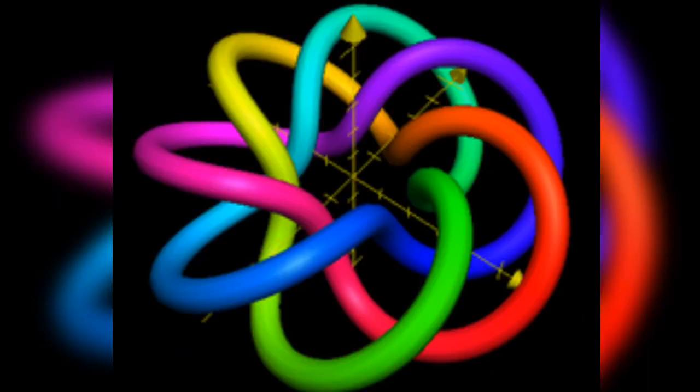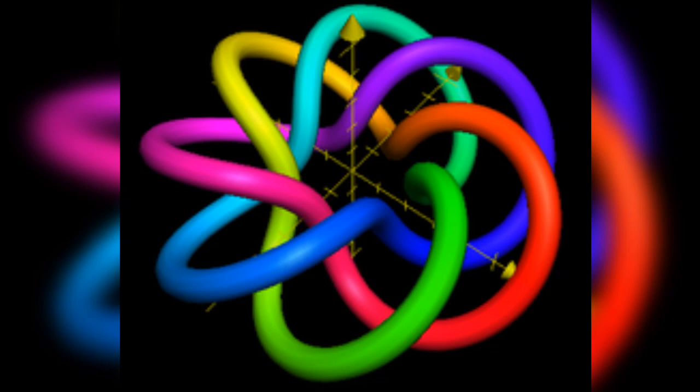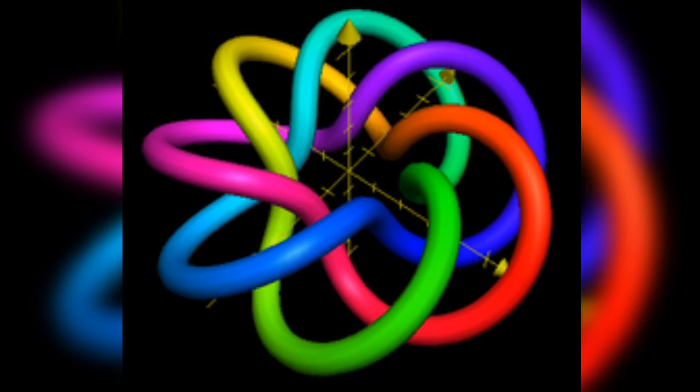Now let's watch the torus knot. In knot theory, a torus knot is a special kind of knot that lies on the surface of an unknotted torus in R3, that is Euclidean space of 3 dimensions.